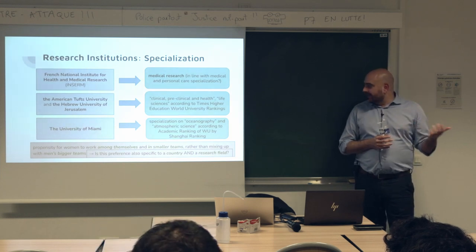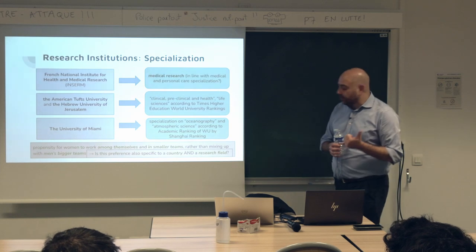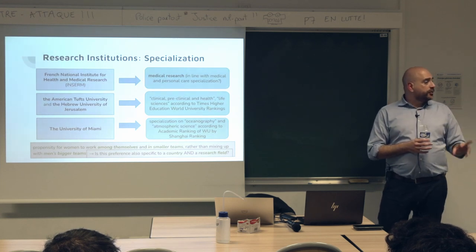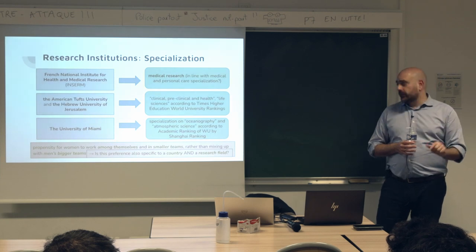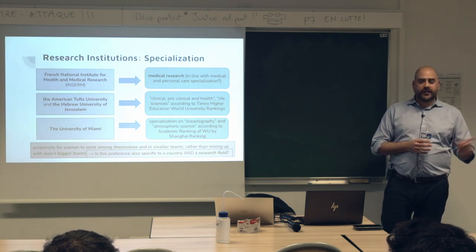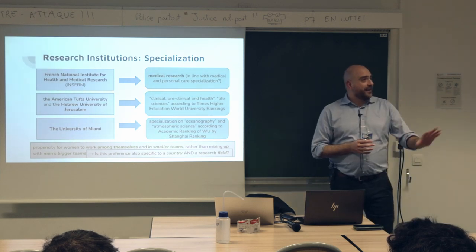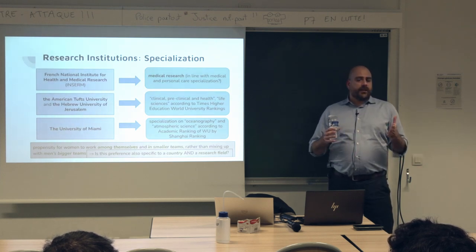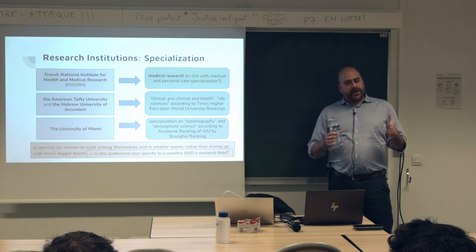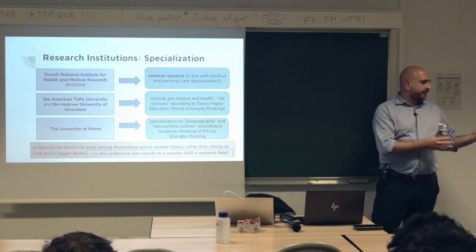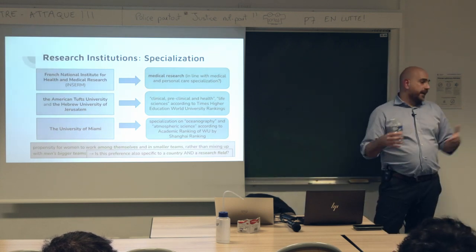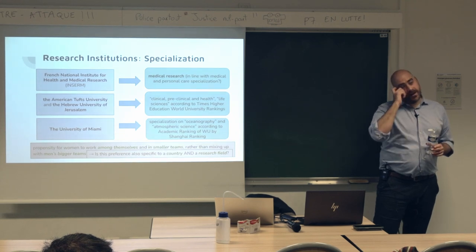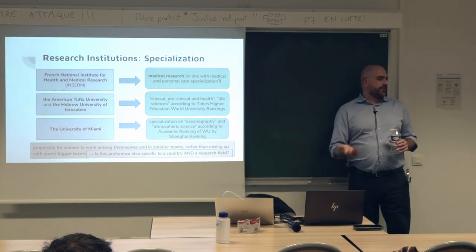Continuing on examiner bias: the USPTO study found an unconscious bias — the more uncertain the name, the less likely examiners were to refuse a patent attributed to a woman inventor. The chief economist of the USPTO contested the methodology. The presenter personally finds the paper clever, noting the use of foreign names as a control for gender ambiguity, though they have not independently tested its robustness.